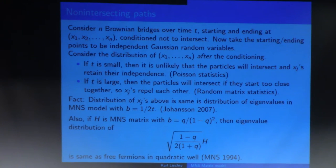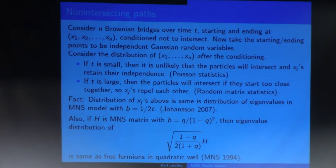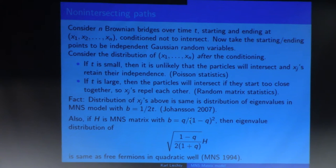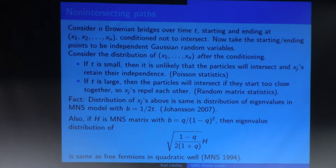This was noticed by Johansson about 10 years ago: the distribution of the starting points for these non-intersecting Brownian bridges is exactly the same as the MNS model, with a simple relation between b in the MNS model and t, the total time. And Muttalib, Neuberger, and Shapiro noticed that the MNS model is equivalent to the free fermion at finite temperature model in the quadratic well — with b being a simple function of q equals e to the minus 1 over temperature. So we can really think about this as a random matrix model or a model of free fermions; they're exactly the same.